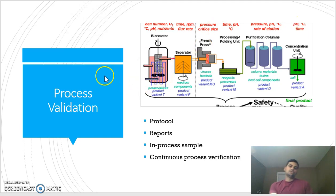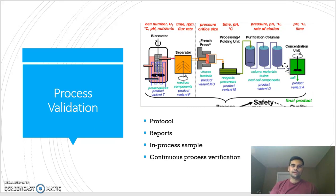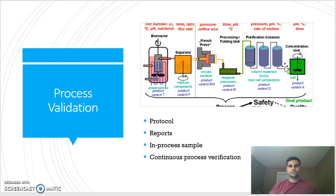For process validation, engineers are responsible to validate a process. Let's say we research a new molecule — that molecule grows from small-scale laboratories to a pilot plant, from the pilot plant it goes into a technology transfer phase, and then comes to a bigger plant where we are manufacturing in 50,000-liter or 50k-liter bioreactors.